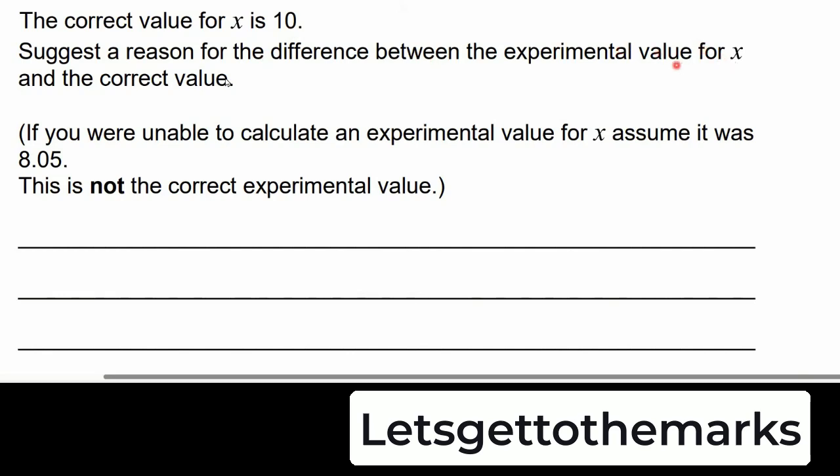Now we have our one marker for part B and it tells us the correct value for x is actually 10, not 5.67 that we calculated. State the reason for the difference between the experimental value of x and the correct value.